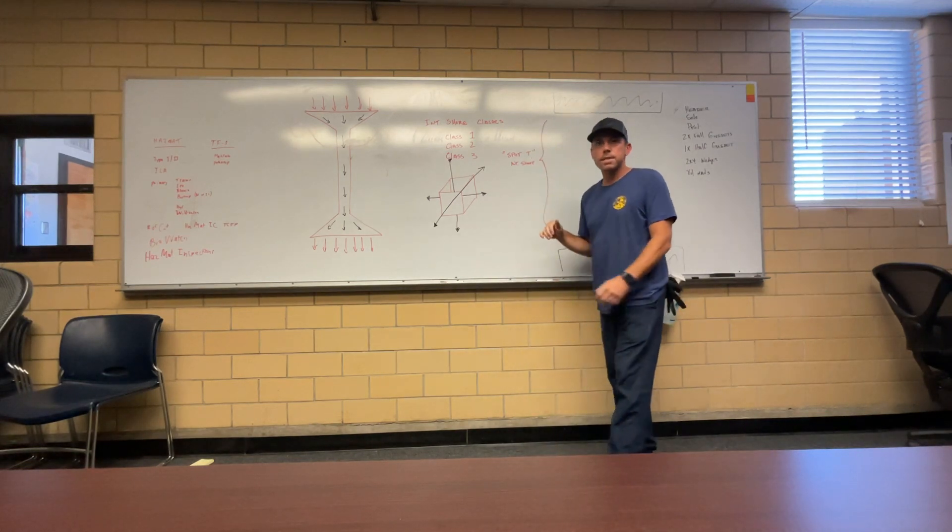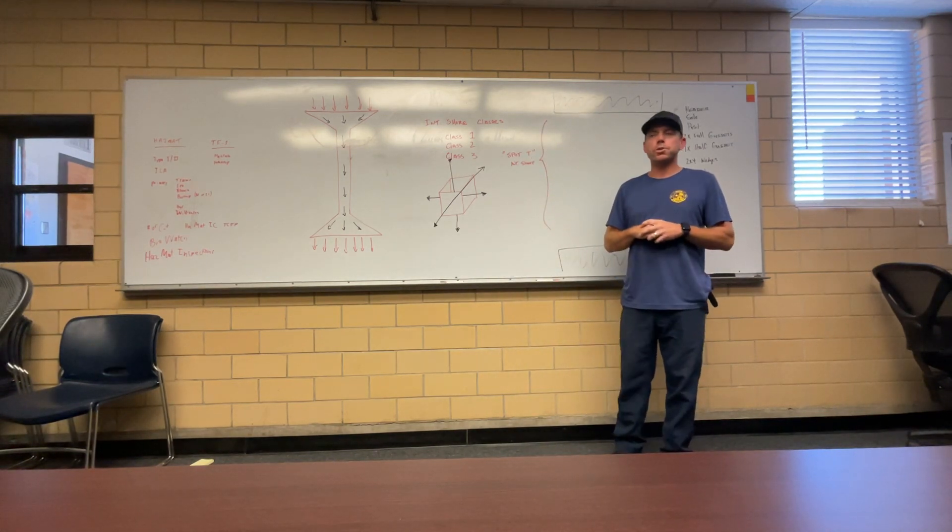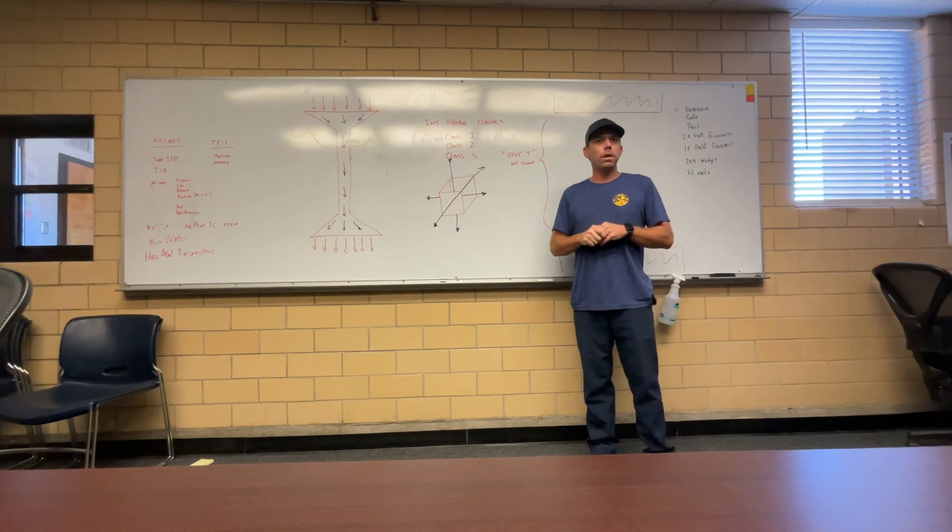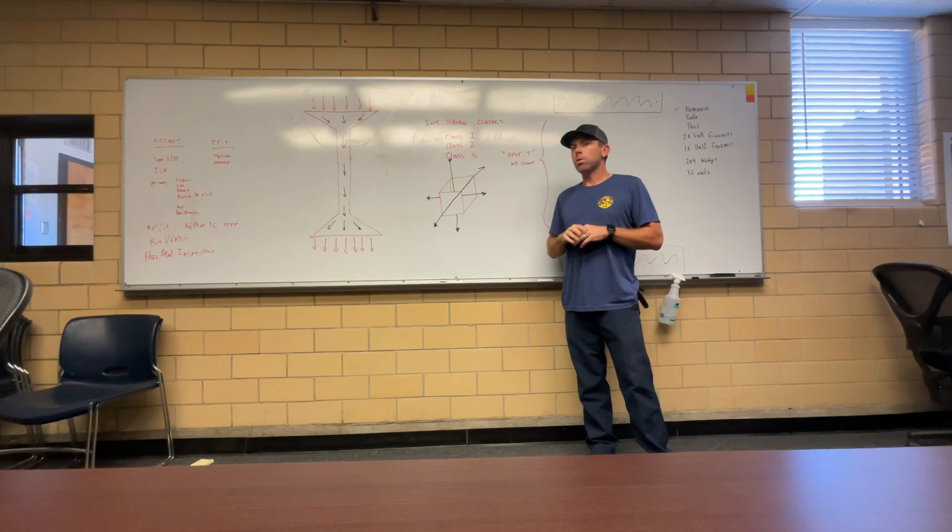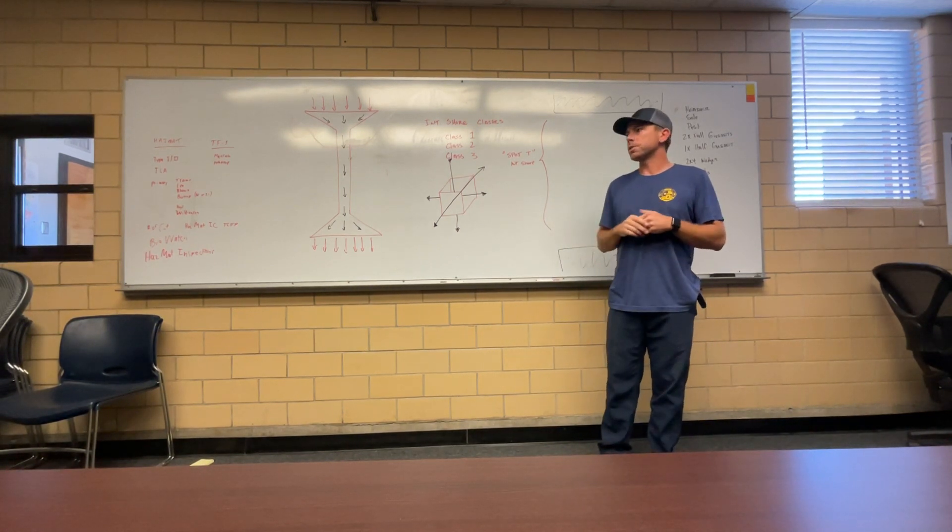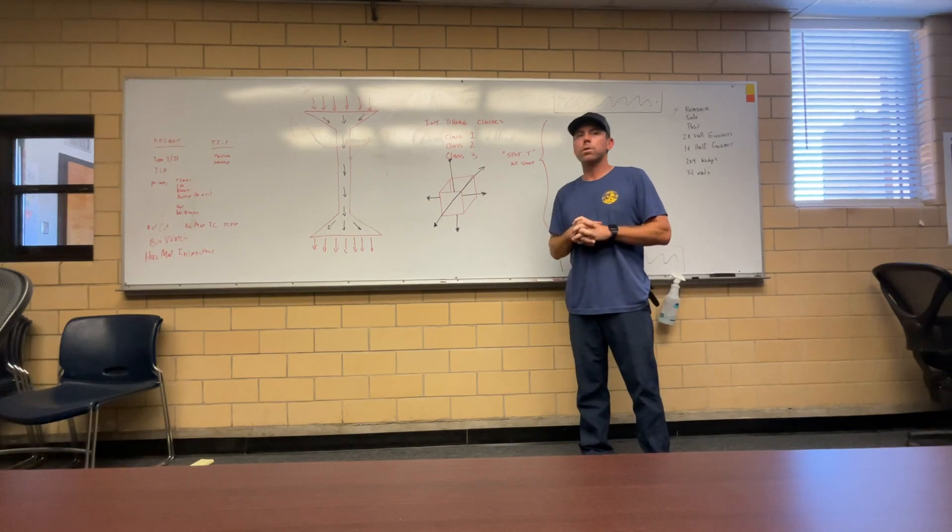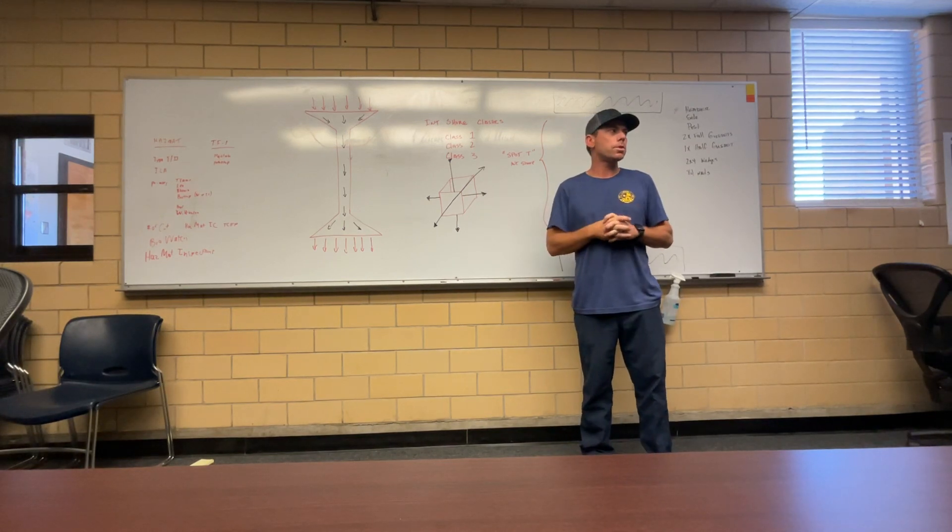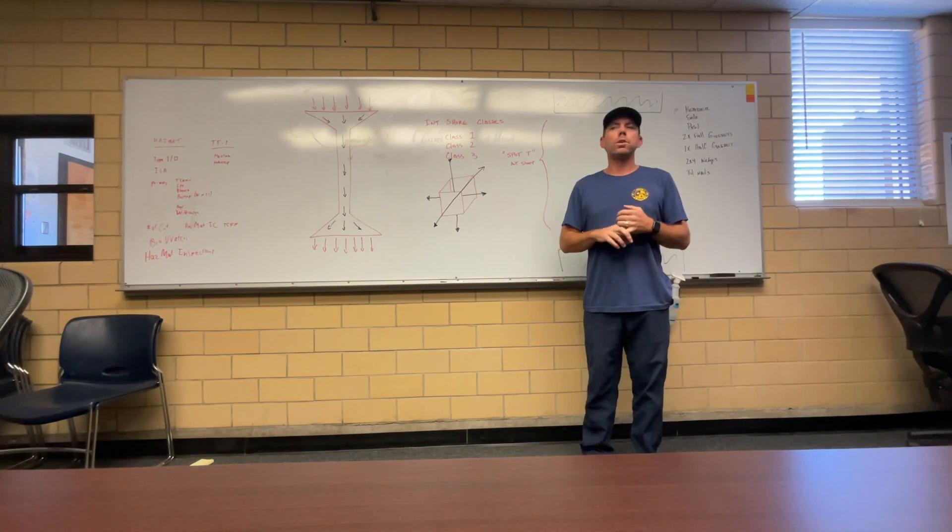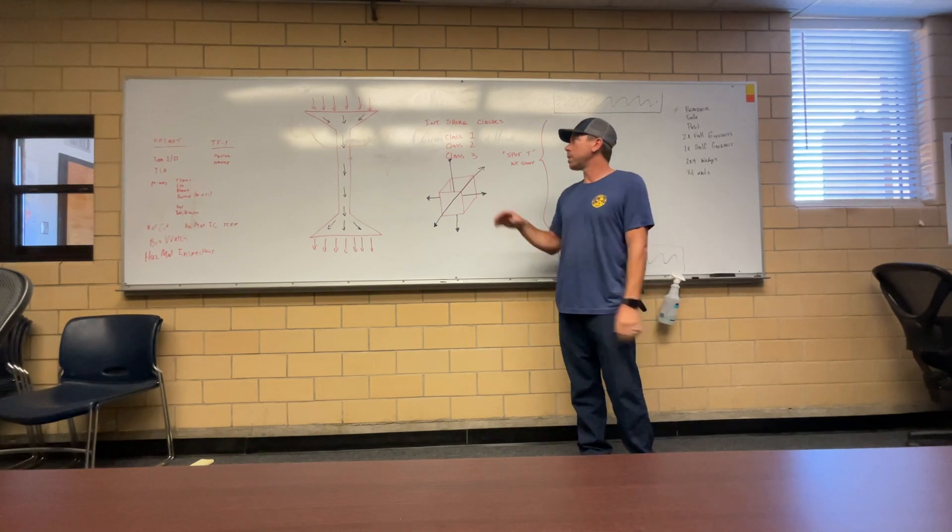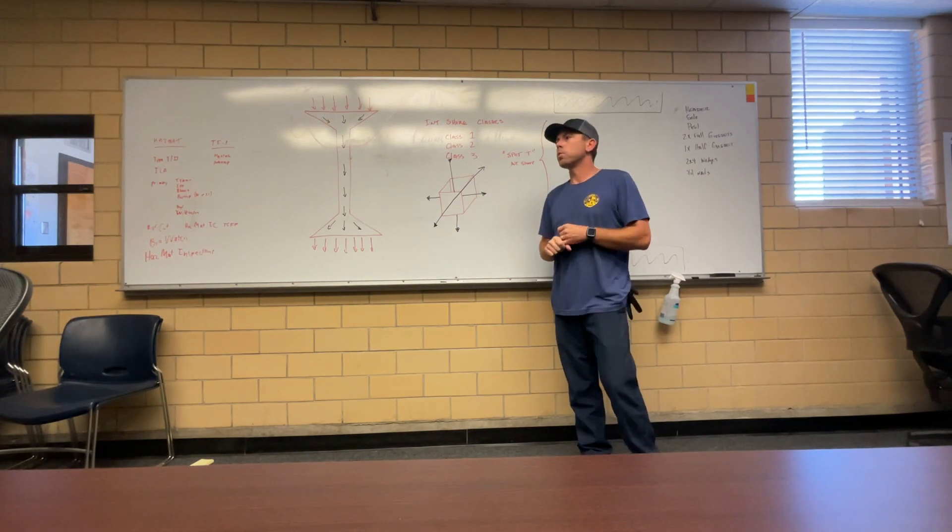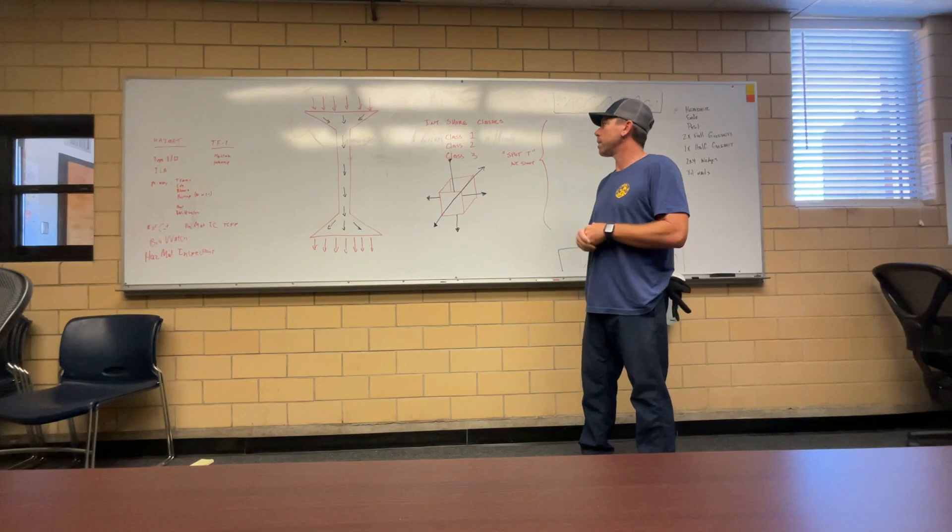So the point of the class today is to talk about the spot T interior shore. So one of the biggest things that we need to remember about a class one or a spot T shore, or a double T, is that it is only a temporary shore. It is not something that we're going to put into the structure and continue to work or anything else. It's something that we're going to place inside the interior of the structure to provide us a safe space where we can work or measure for more measurements until we can put a more substantial shore in there, whether that's a class two or a class three.